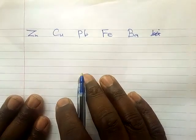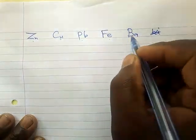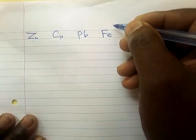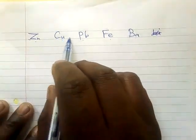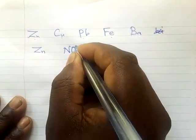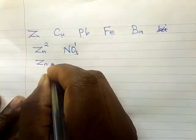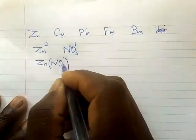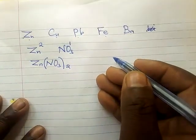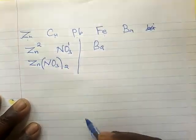Elements not in the first 20 — such as zinc, copper, lead, iron, and barium — all have a valency of two, except iron which can have a valency of two or three. For example, zinc nitrate: nitrate is NO3⁻ with valency one, zinc has valency two. Using the criss-cross, zinc gets 1 and nitrate gets 2, so the formula is Zn(NO3)2. The same approach applies for lead carbonate, lead sulfate, and similar compounds.